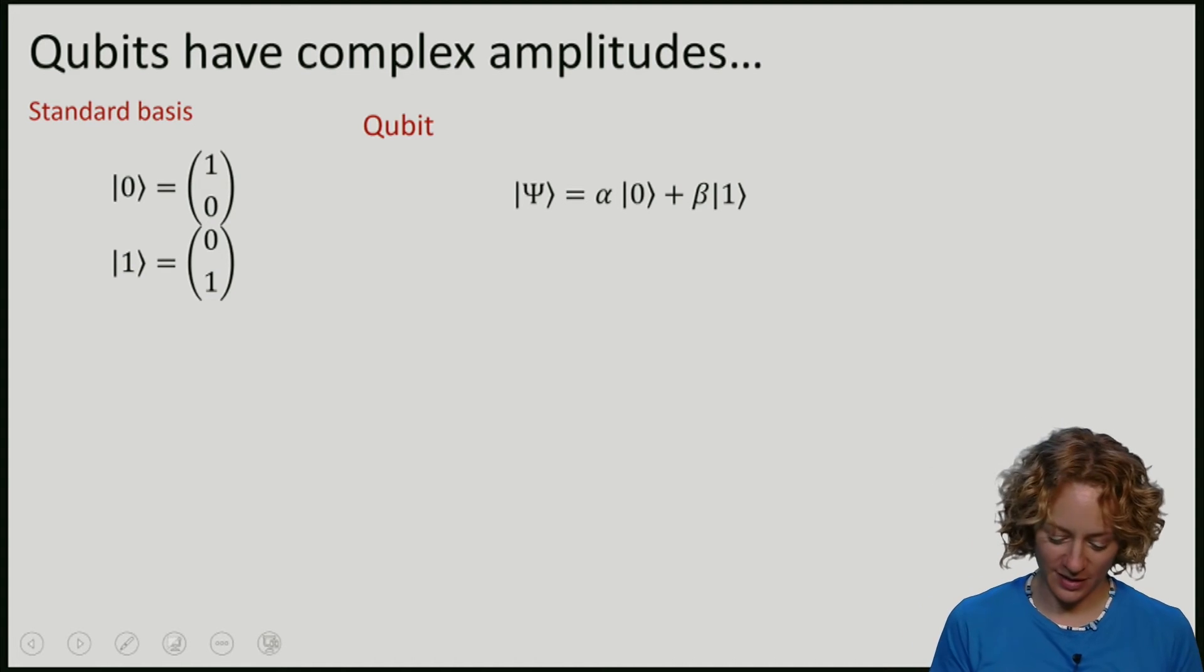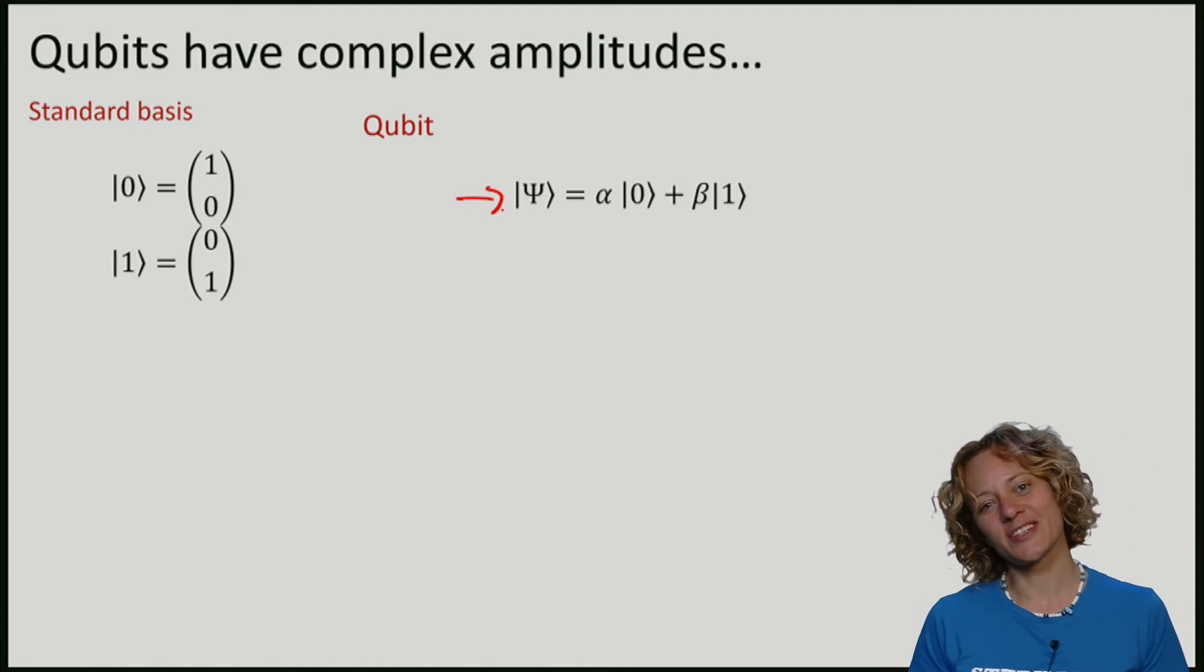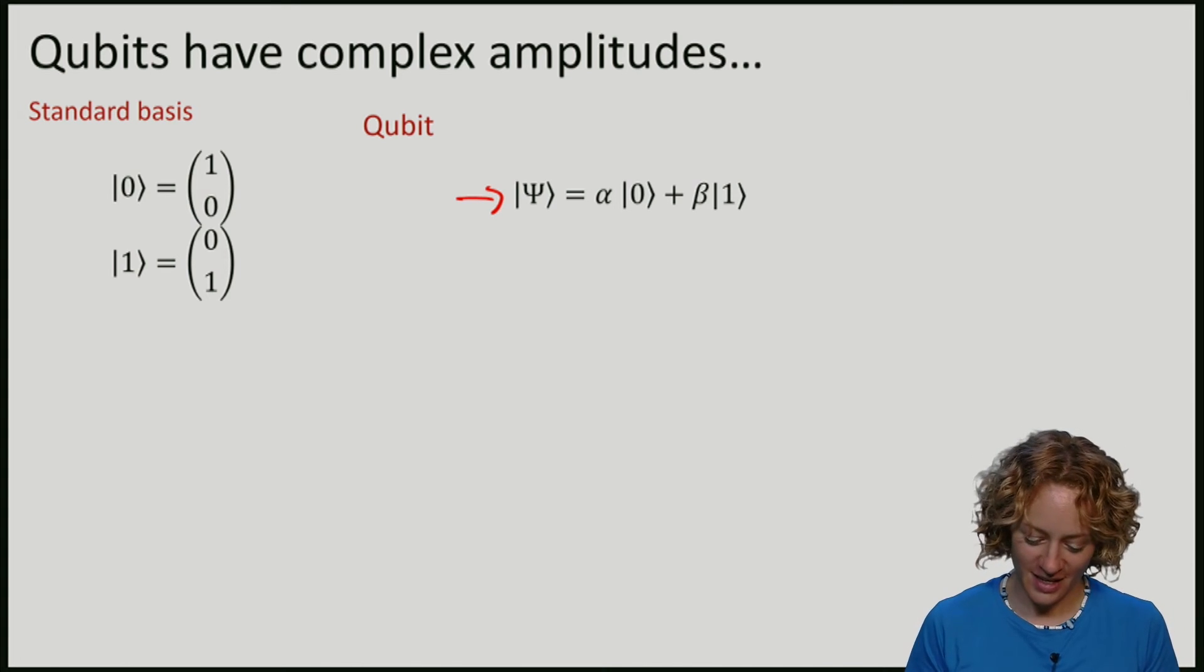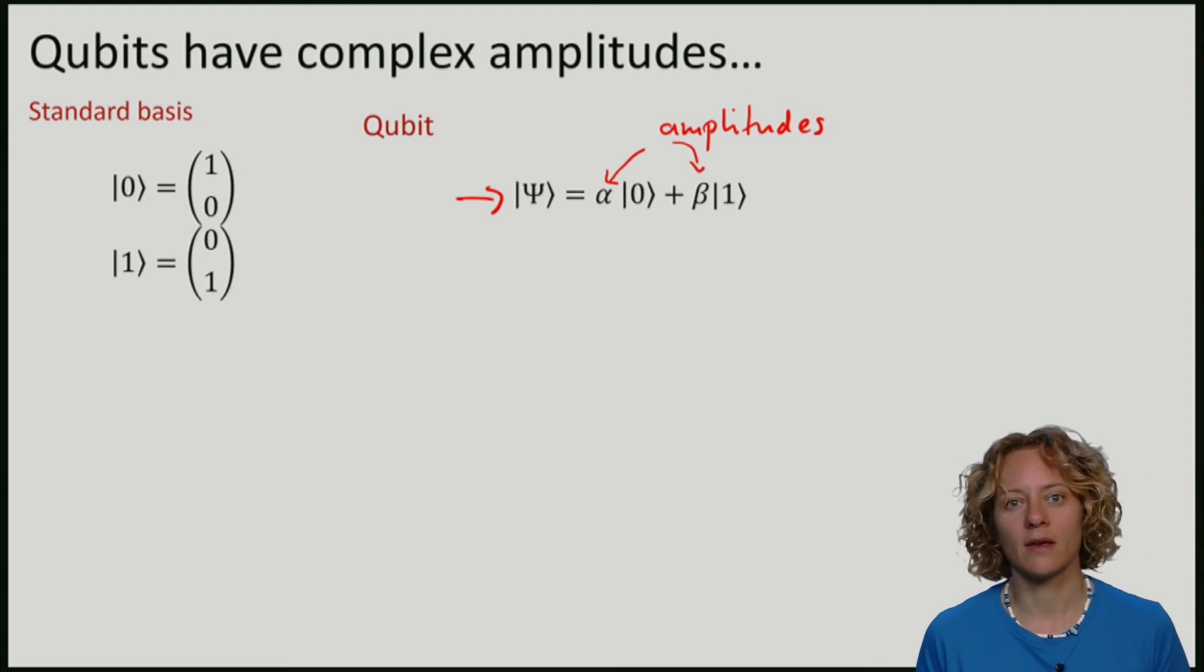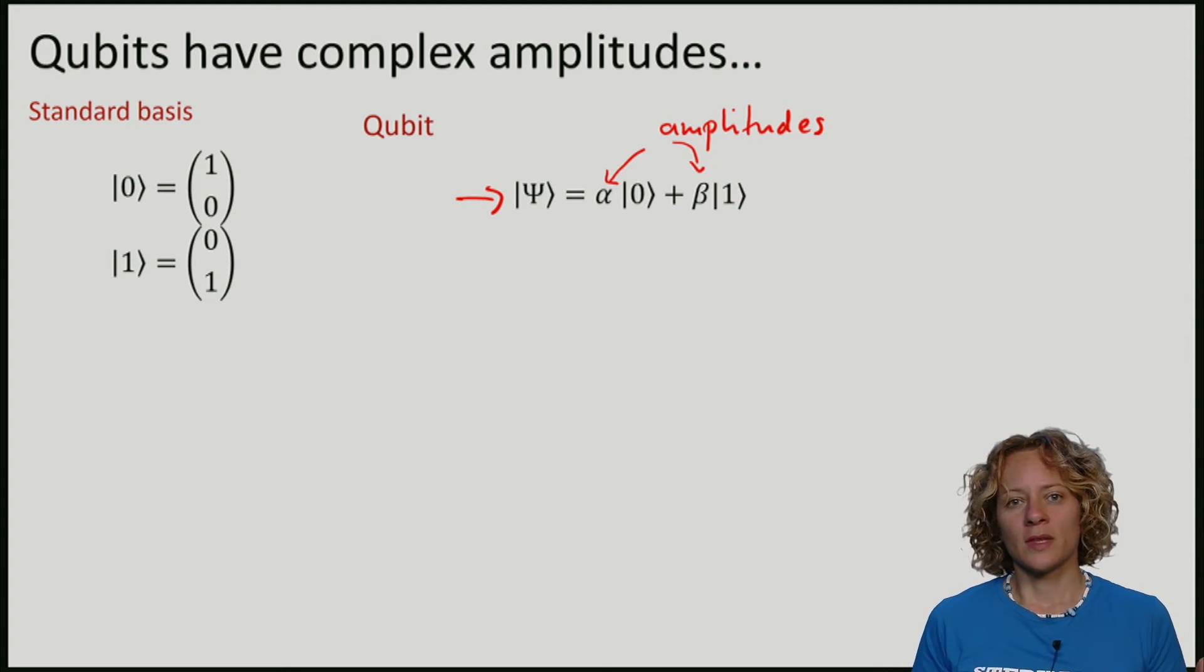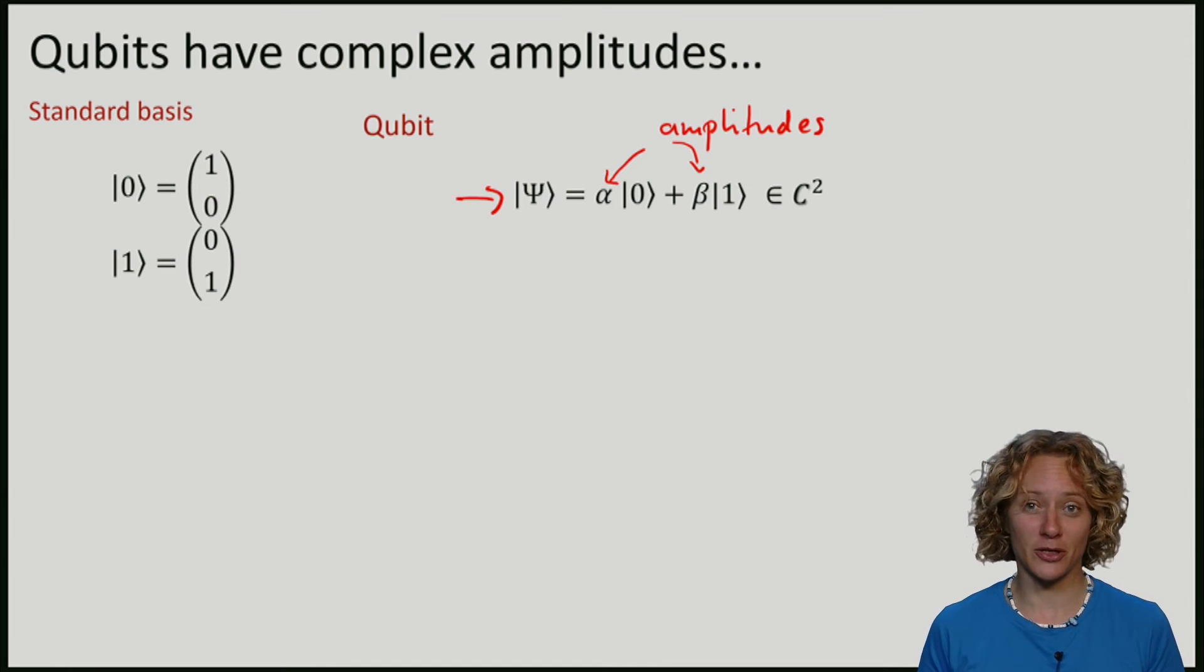So our qubit looks like this. And the question is, what are these numbers alpha and beta? We will call these numbers amplitudes. And even though I've drawn them on the real number sphere, they can in general be complex numbers. A qubit is thus some element of a complex vector space of dimension 2.